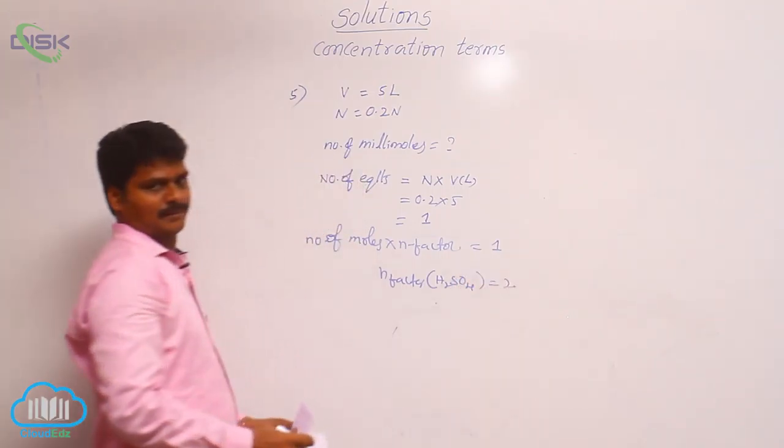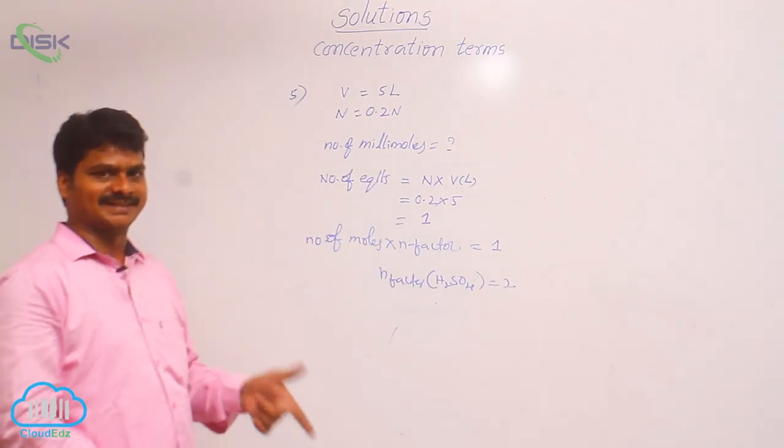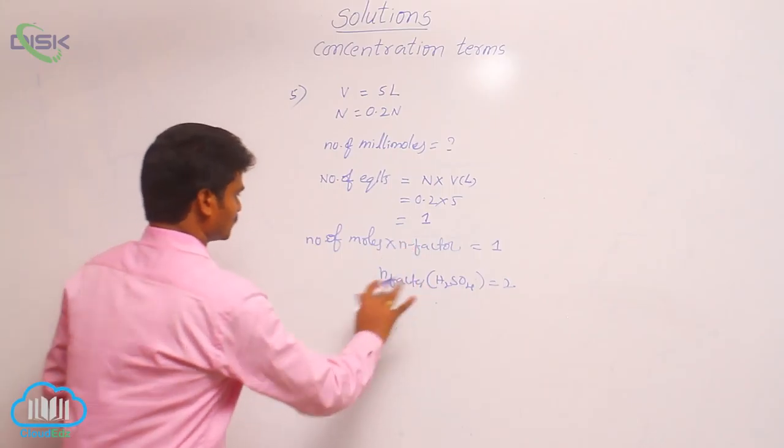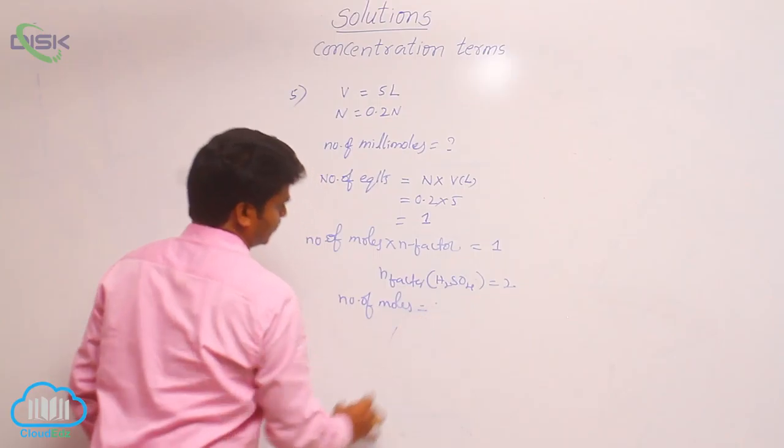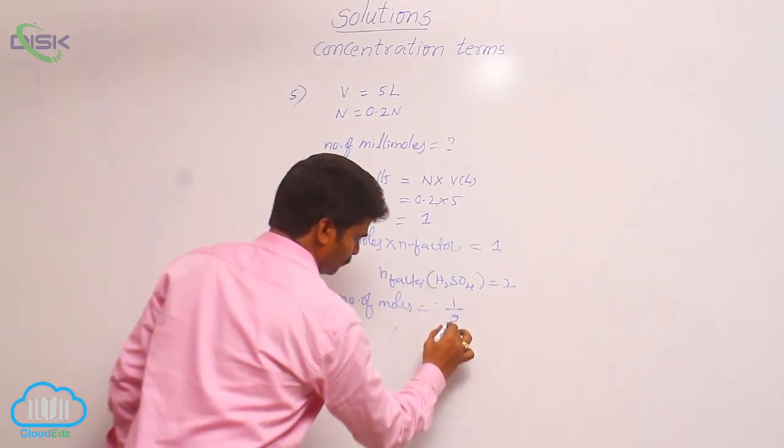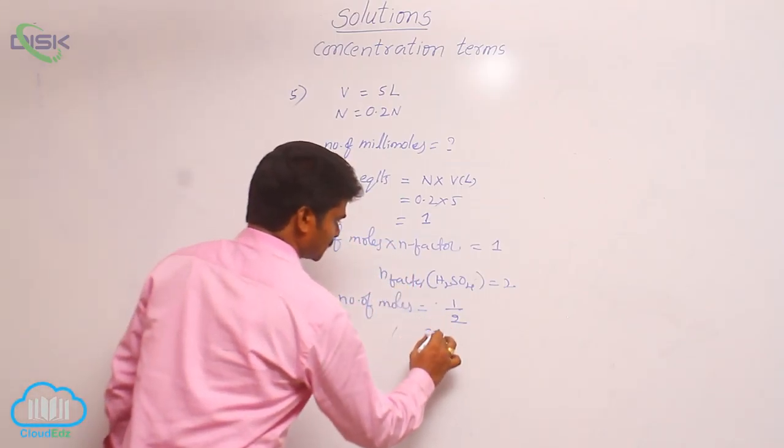Why? Because H2SO4 is an acid. For an acid, n-factor means its basicity. H2SO4 basicity is 2. That is why I substitute 2. So now, number of moles is equal to 1 by its n-factor. What is n-factor? 2. That is why 1 by 2. That means 0.5.